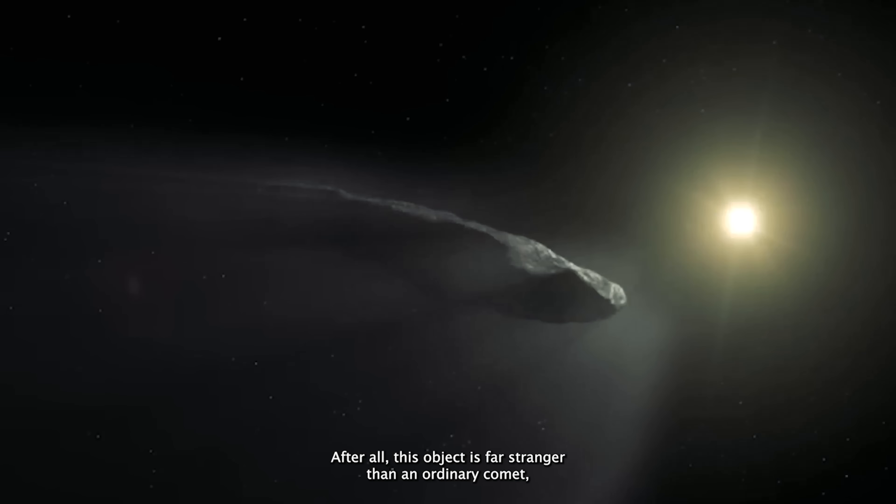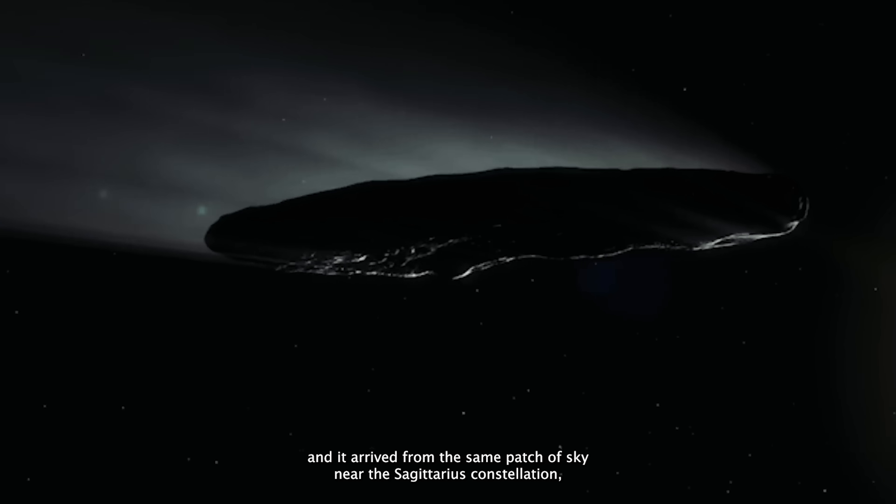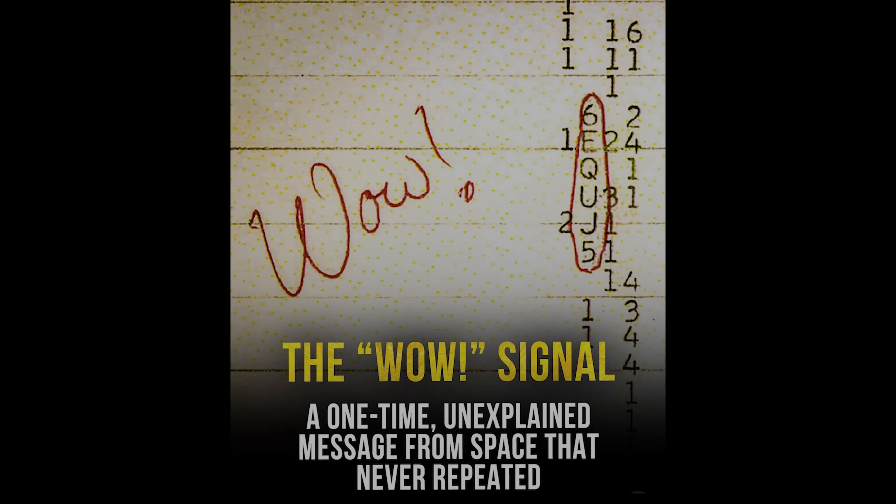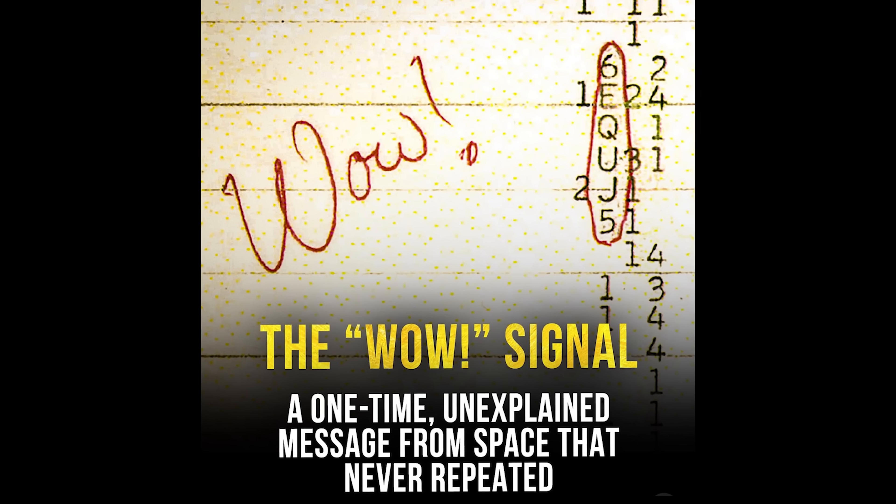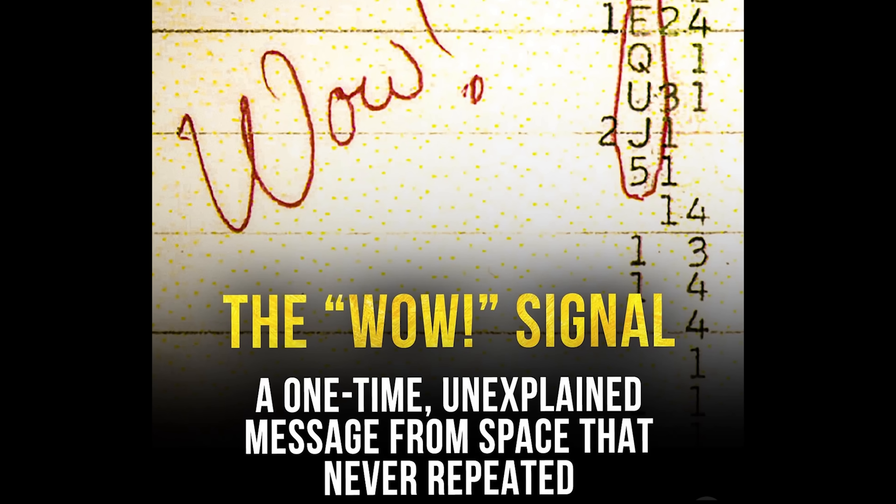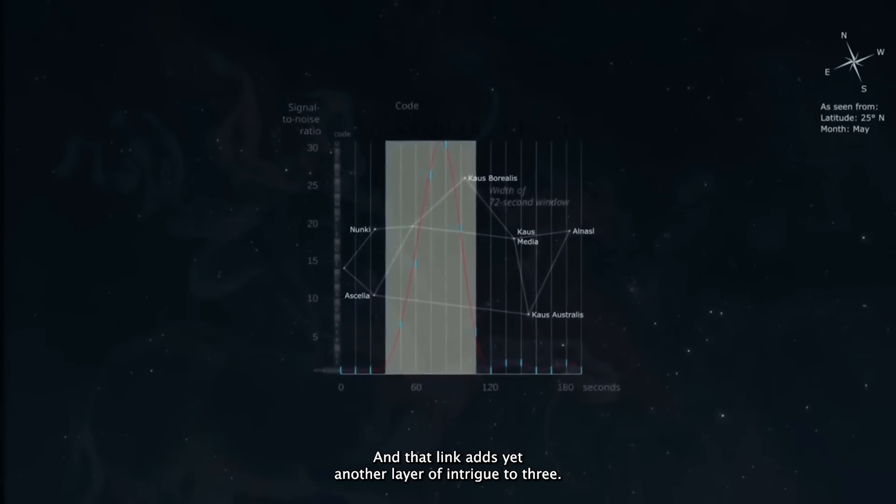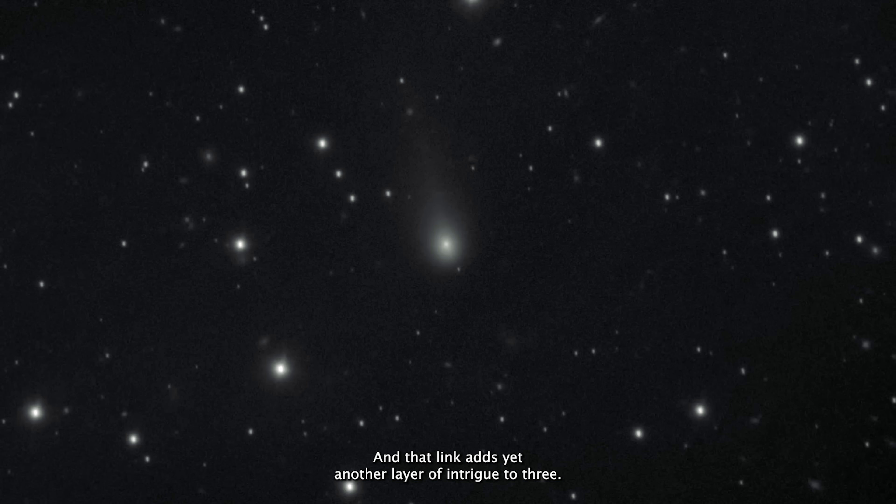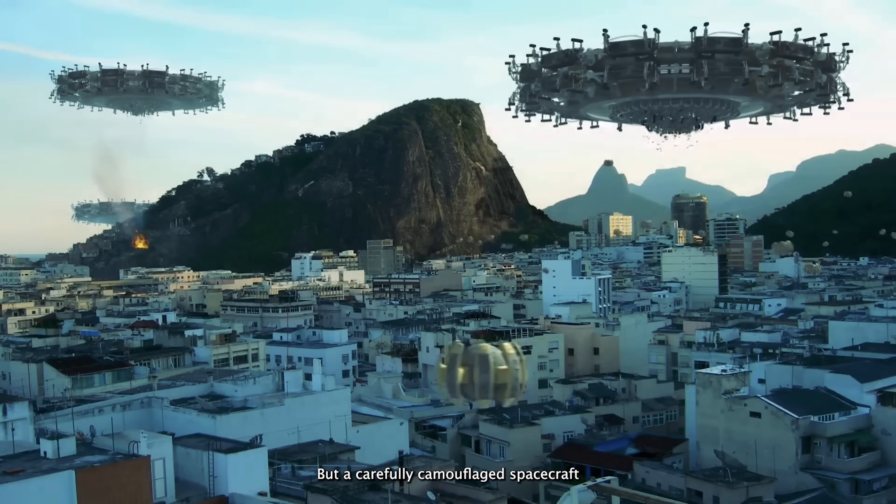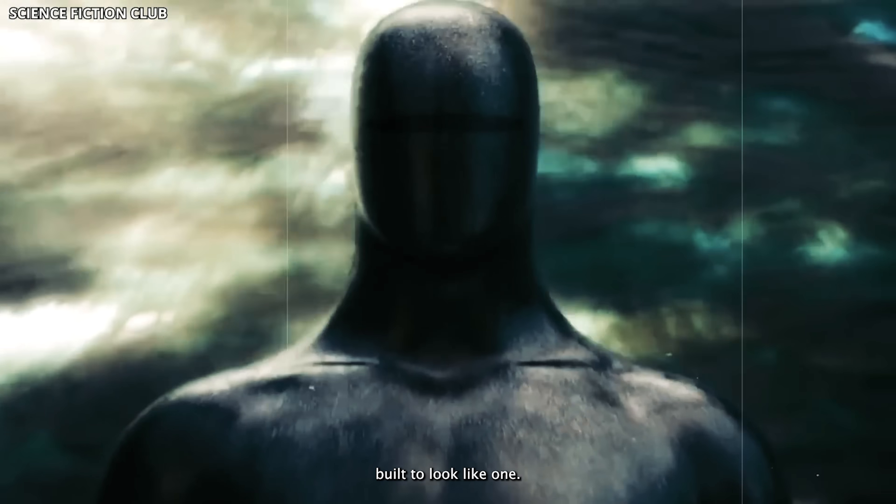After all, this object is far stranger than an ordinary comet, and it arrived from the same patch of sky near the Sagittarius constellation, where enigmatic radio signals have been recorded for decades. Among those strange radio detections is the legendary WOW signal, one of astronomy's greatest unsolved mysteries. And that link adds yet another layer of intrigue to 3i Atlas. Some researchers now openly wonder if this visitor isn't a comet at all, but a carefully camouflaged spacecraft built to look like one.